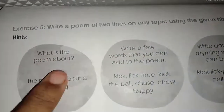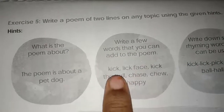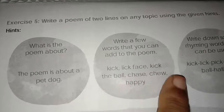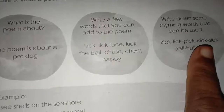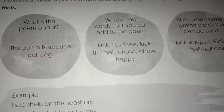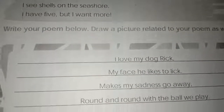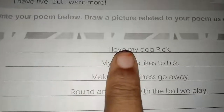That was Exercise 4. Now, Exercise 5: write a poem of two lines on any topic using the given hints. Let's write a poem about a pet dog. Some words to add: kick, lick, face, chase, happy. Rhyming words that can be used: kick, lick, pick, rick, sick; ball, haul, call. Now write your poem and draw a picture of a dog related to your poem.